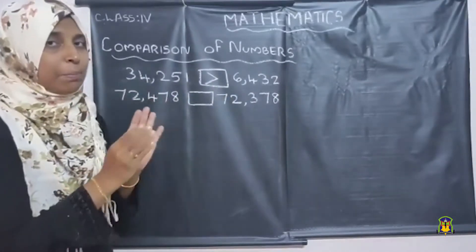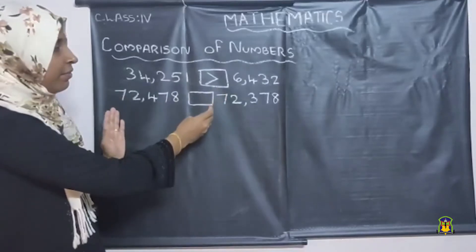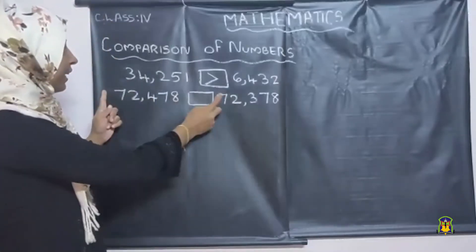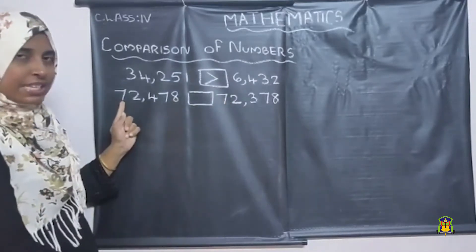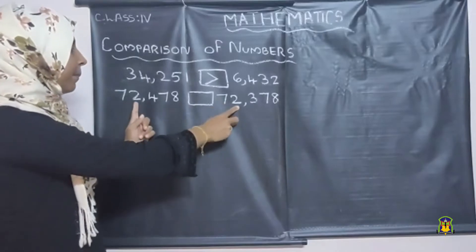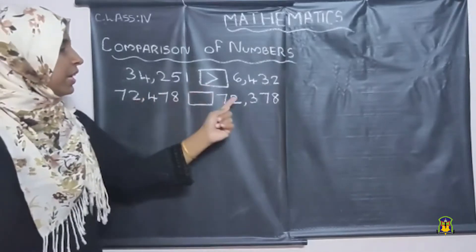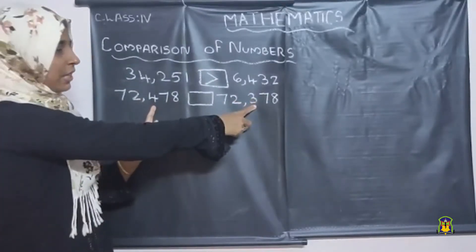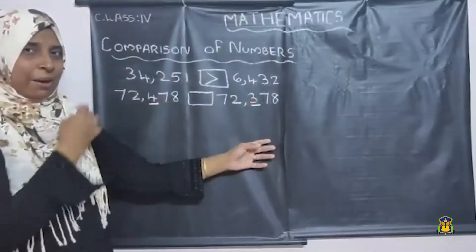If the number of digits are the same in both numbers, then we want to compare the digits from the left side. We want to compare until we get two different digits. In the ten-thousands place, the first number has seven and the second number also has seven — both are the same. Then compare the next digit: in the thousands place, the first number has two and the second number also has two — same numbers. Then compare the hundreds place digit: the first number has four and the second number has three — different numbers.